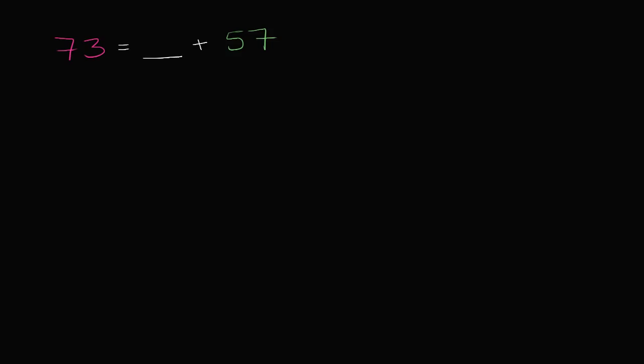Let's say someone walks up to you on the street and says, quick, 73 plus blank is equal to 57. What would blank be? Well, there's a couple of ways to think about it. Blank is essentially what you have to add to 57 to get to 73. It's the difference between 57 and 73.